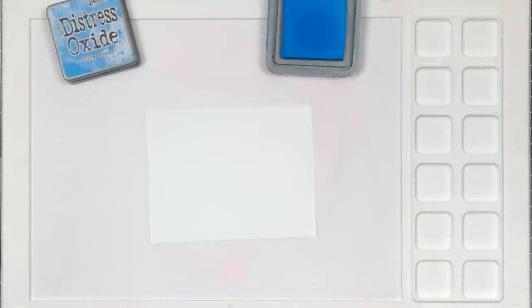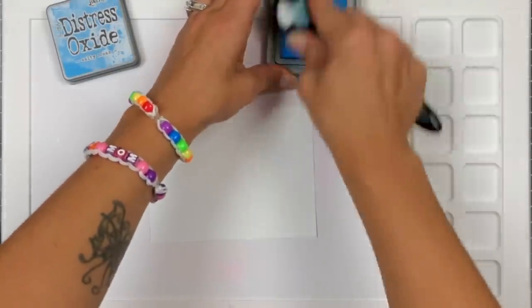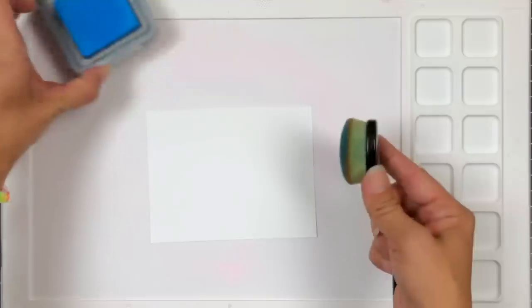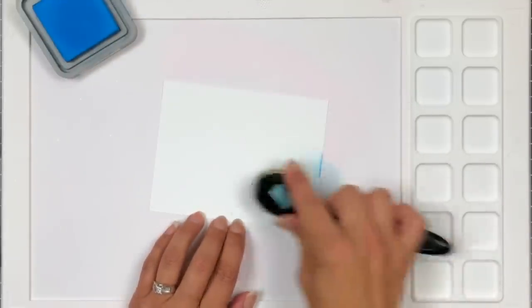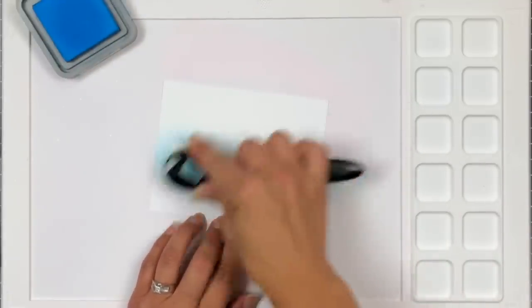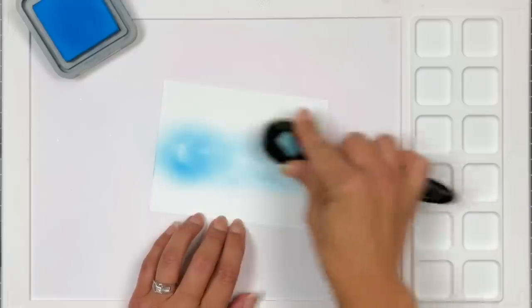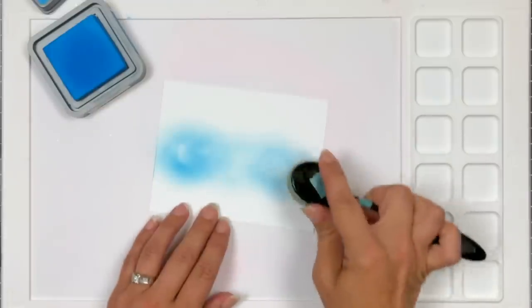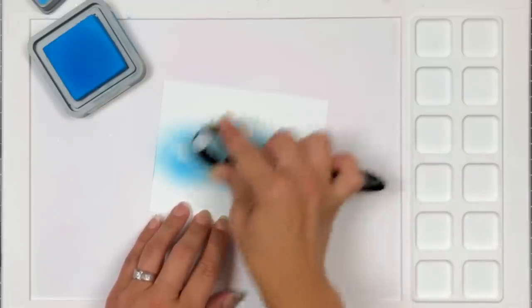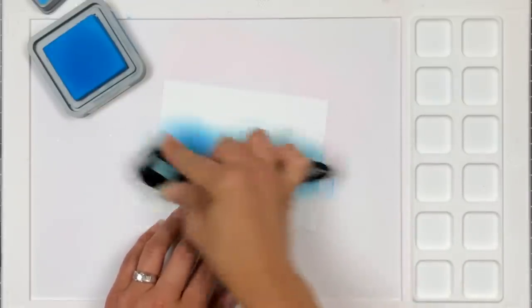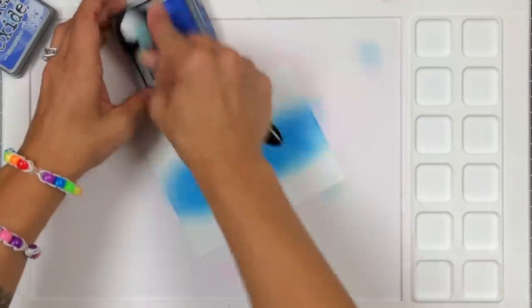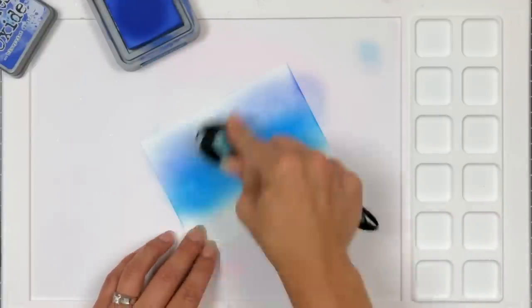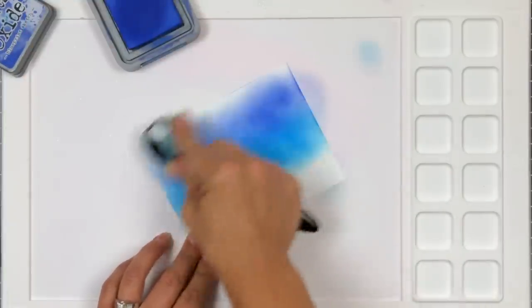Next this is going to be the main background piece for my card and I'm going to be using salty ocean distress oxide ink with a blending brush and I'm just lightly applying that in the middle. I know I'm going to have that bottom area covered up so I'm not going all the way down. Then I'll come in with blueprint sketch and I'm going to add that. The blueprint sketch has a purple tone to it which I thought just really added into the spooky Halloween background and I'm blending that into that salty ocean.